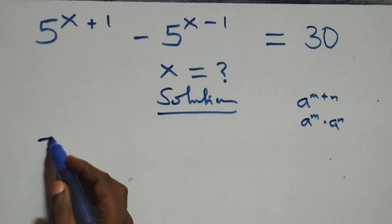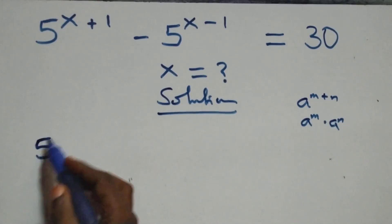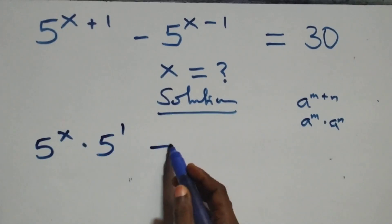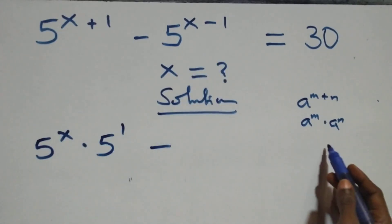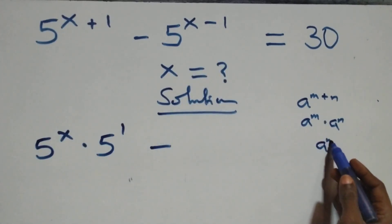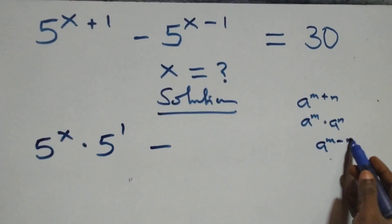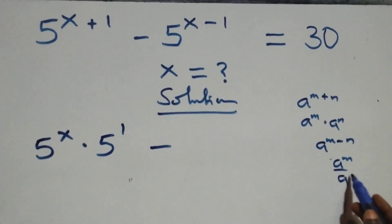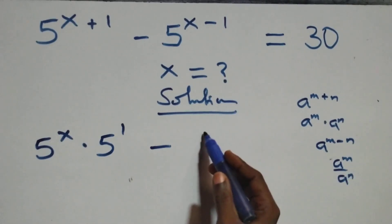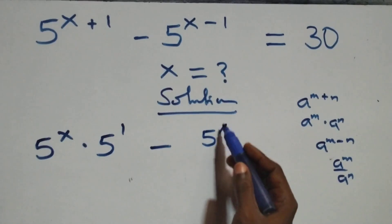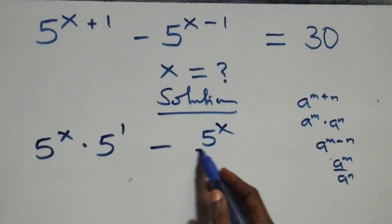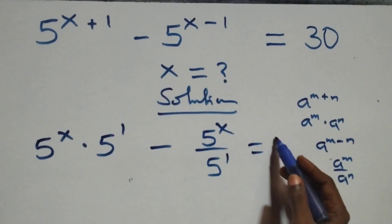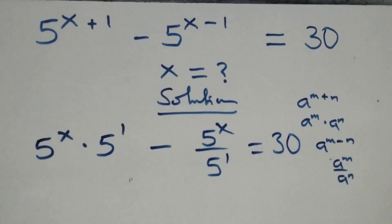Applying this here, we get 5 raised to power x times 5 raised to power 1. Then, using the rule that a raised to power n minus n equals a raised to power n over a raised to power n, we get 5 raised to power x over 5 raised to power 1, equals 30 on this side.